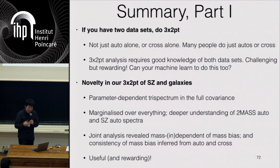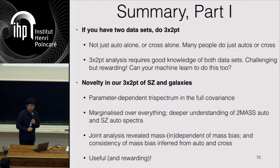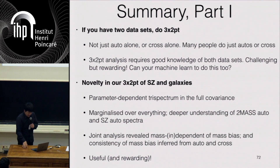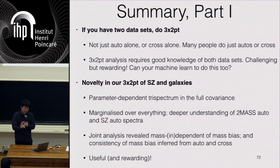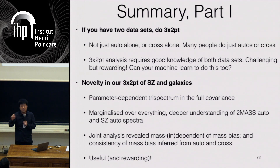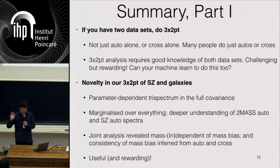The novelty in our analysis: we include the full tri-spectrum with parameter dependence in the covariance, marginalize over everything, and our analysis revealed the mass-independence of the mass bias. We also got consistent constraints on mass bias from auto and cross. This mass bias we got is very consistent with the mass bias needed to reconcile cluster number count results with the primary CMB.